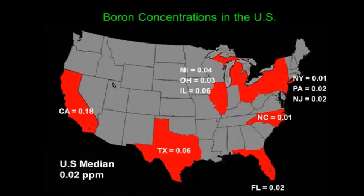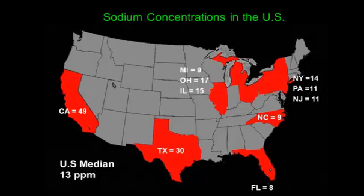Boron concentrations are generally low everywhere, with the exception of maybe California. The US average is 0.02 parts per million boron. However, in every state you will find areas that have high levels of boron. Sodium has already been covered previously.